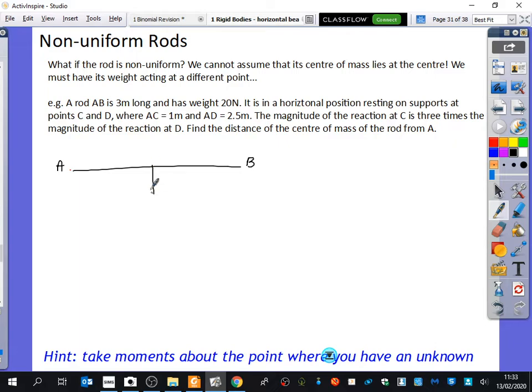Now your instinct is probably to go in here and just say 20 in the middle, but we're obviously looking at non-uniform rods here. So let's read the rest of the question. It's in a horizontal position resting on supports at C and D, where AC is equal to 1. So here's C. And AD is equal to 2.5.